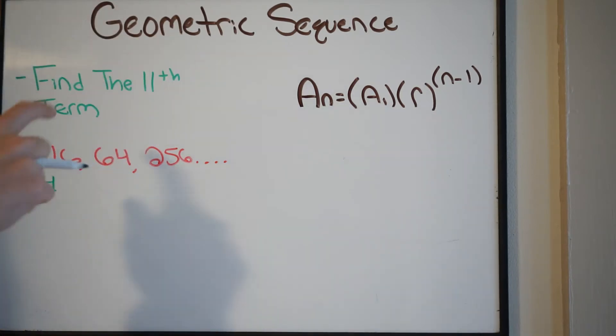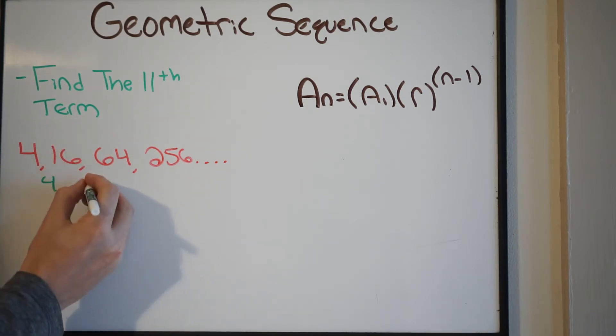And then, just moving forward, if I do 64 divided by 16, well, again, that's going to give me 4. If I do 256 divided by 64, that will also give me 4.